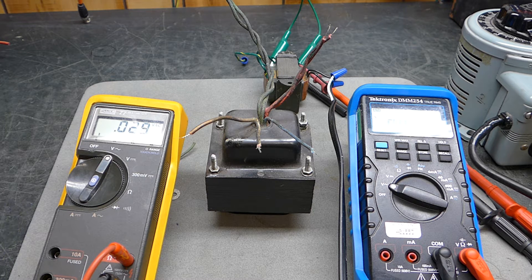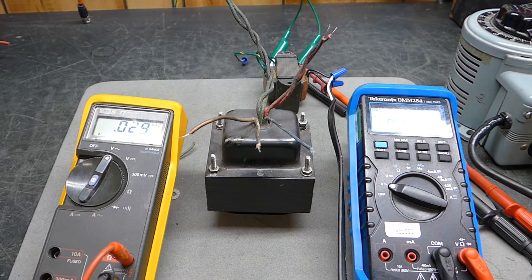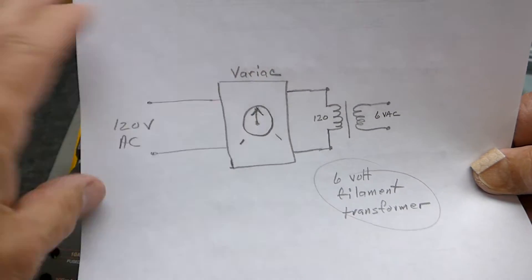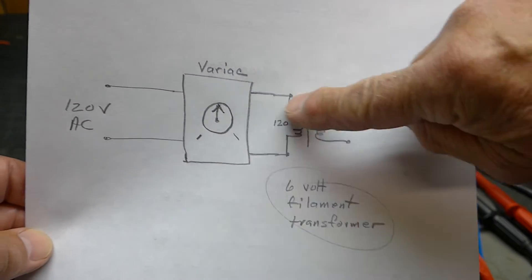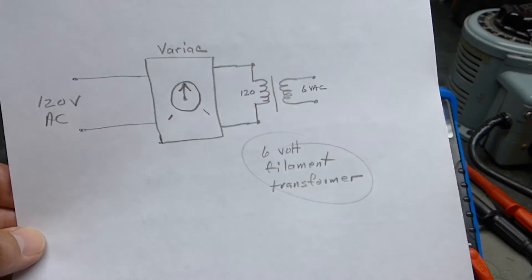It's the same setup that I used in the other one. Here's the schematic of the input - this is our 120 volts coming in from the AC mains into our variac, then this little 6-volt transformer.